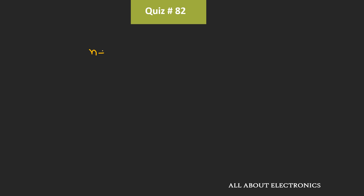Now, we know that for the n-channel JFET, whenever the Vds is greater than or equal to Vgs minus Vp, at that time the JFET operates in the saturation region. But in case of the n-channel JFET, this Vgs and the Vp are negative.